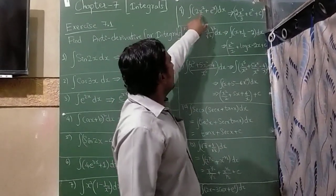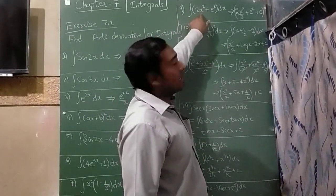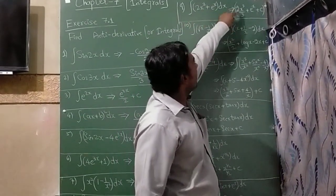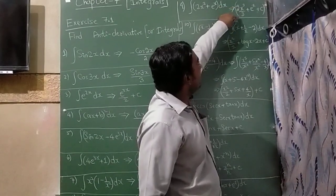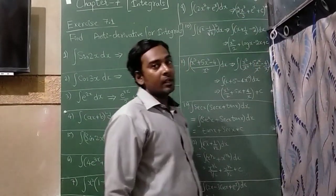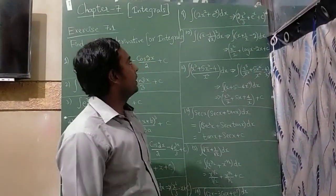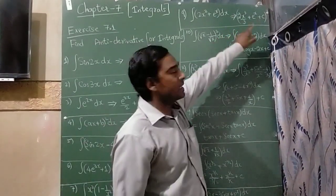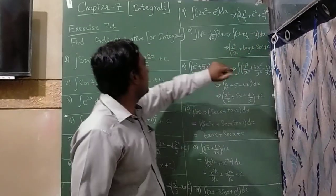The ninth question is integration of (2x square plus e raise to x) dx. Since x square is there, I have written 2 times x cube by 3, plus e raise to x, plus c.